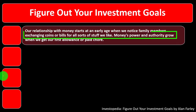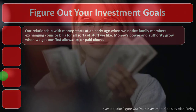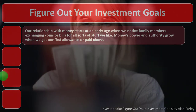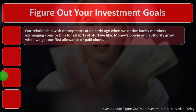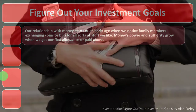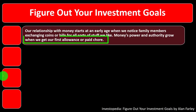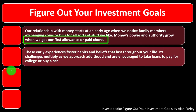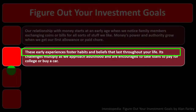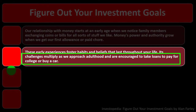Our relationship with money starts at an early age when we notice family members exchanging coins or bills for all sorts of stuff we like. We learn early that money can be exchanged for other stuff that we want. Money's power and authority grow when we get our first allowance or paid chore, and these early experiences foster habits and beliefs that last throughout your life.